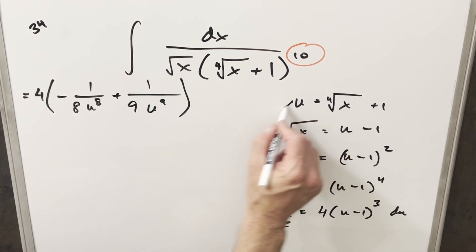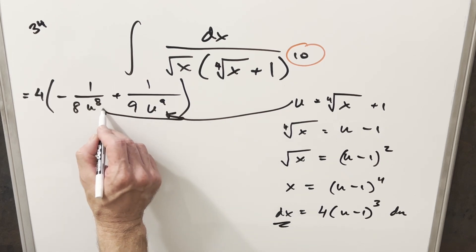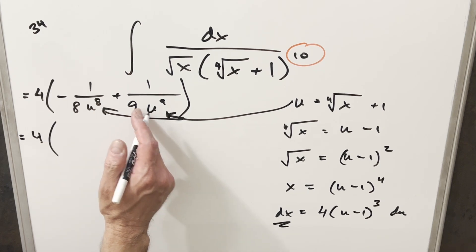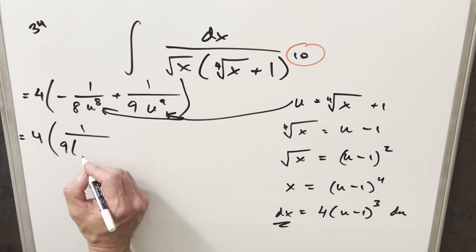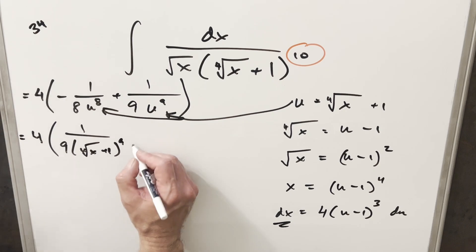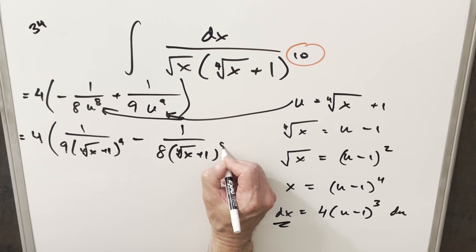But now from here let's just back substitute to get everything back into x. So we'll back substitute here and here. And so what's going to happen, we'll keep our 4 out front. Then I'm going to reorder it just because I like the plus sign first. So we'll have here 1 over 9. And then plugging in for u we're going to have this fourth root of x plus 1 all to the 9th. And then for this term we have a minus 1 over 8. Same exact thing for our u. And then we'll add this to the 8th power.